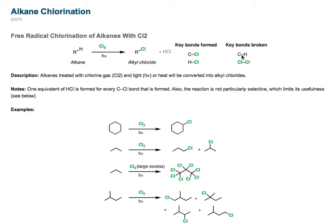Specifically, this is a free radical substitution reaction on an alkane. How do we know it's a free radical substitution reaction? Look for the presence of light — light is really important for the mechanism. Some of the other bonds formed and broken: we're forming HCl and also breaking the chlorine-chlorine bond. So this is the sum total of all the bonds formed and broken in a free radical chlorination reaction of alkanes.